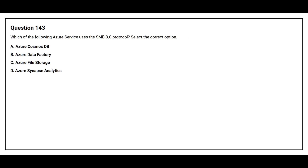Question number 143. Which of the following Azure services uses the SMB 3.0 protocol? Option A: Azure Cosmos DB. Option B: Azure Data Factory. Option C: Azure File Storage. Option D: Azure Synapse Analytics. The correct answer is Option C: Azure File Storage.